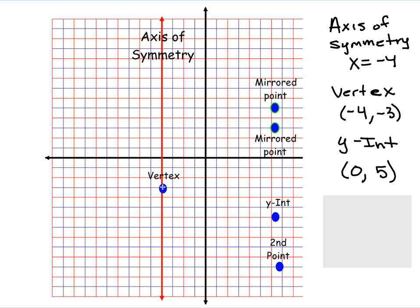Then we graph our y-intercept, which is at 0, 5 — that's 5 units up on the y-axis. Now that we have the y-intercept and our vertex, we need to find a second point on the same side as the y-intercept so we can make our curve.